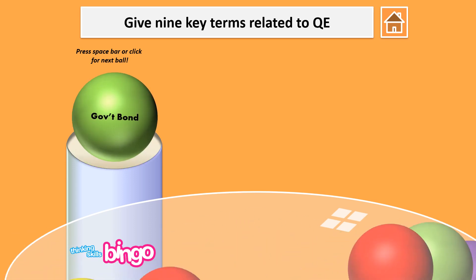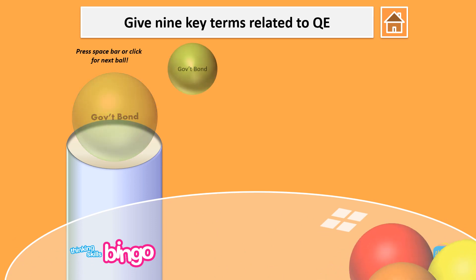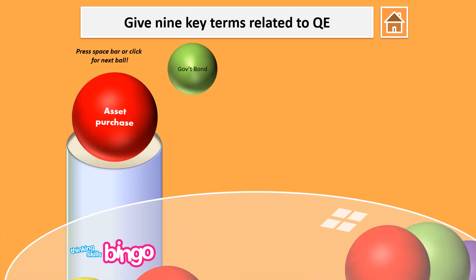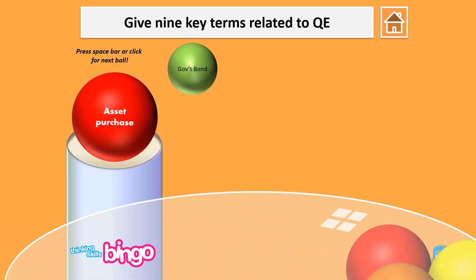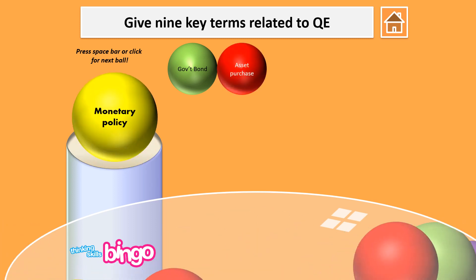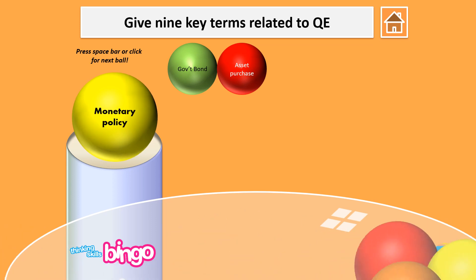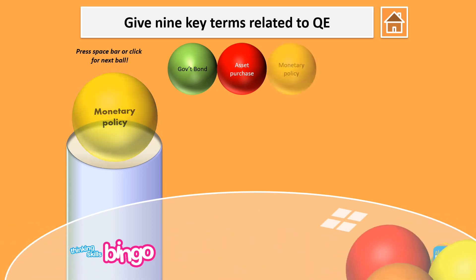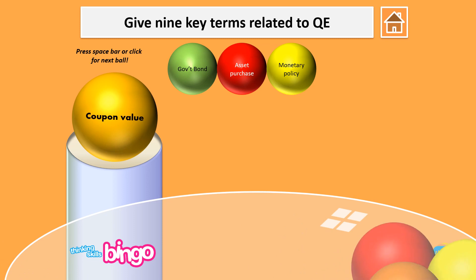Government bond. Cross that off if that is on your grid. And the next one: asset purchases. Cross that one off. Monetary policy — have you got that one? Cross it off if you have. Coupon value.